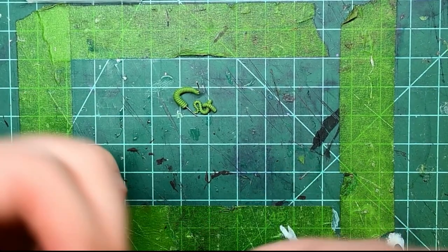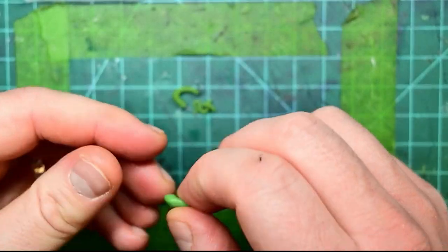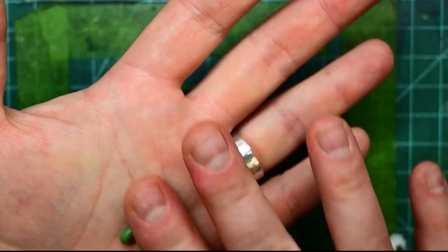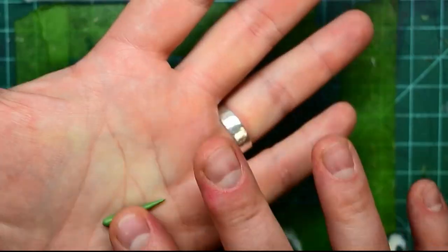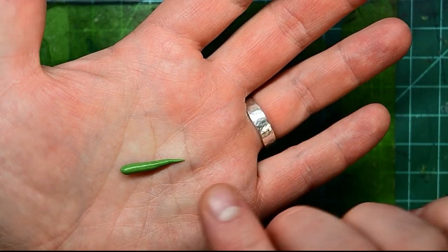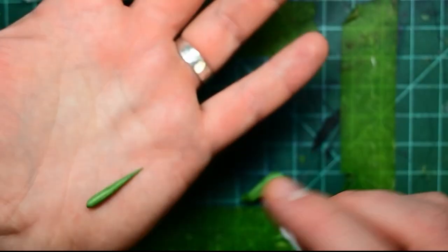And then basically to get started on your tentacles, you can just bust off a piece of putty and then roll it on your hand or between your fingers. Just make sure that your fingers are wet with some water so that it's not going to stick. And then you can just roll it into kind of a carrot shape, tapered at one end, thick at the other end. That's the basic shape for a tentacle.